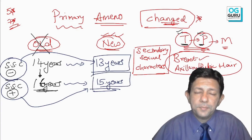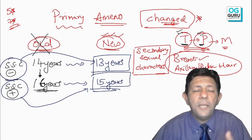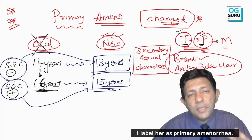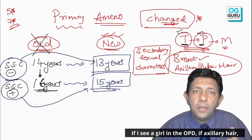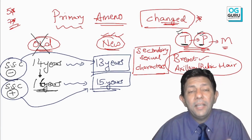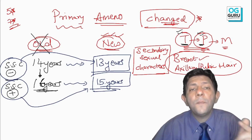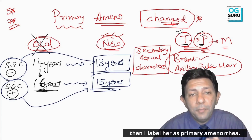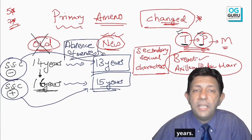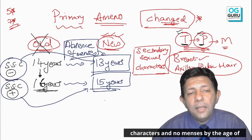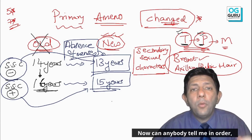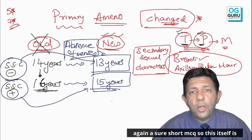Just remember 13 and 15. If I see a girl with no axillary hair, no pubic hair, no breast development even at age 13, I label her as primary amenorrhea. If axillary hair, pubic hair, and breast development have started, I wait, and if periods still don't start by 15, I label her as primary amenorrhea. Absence of menses by 13 years without SSC, and no menses by 15 years with SSC.